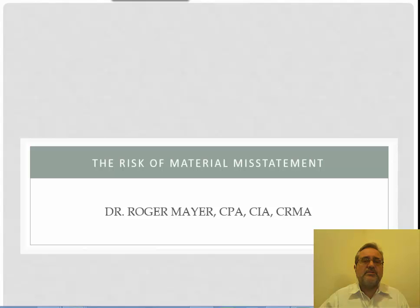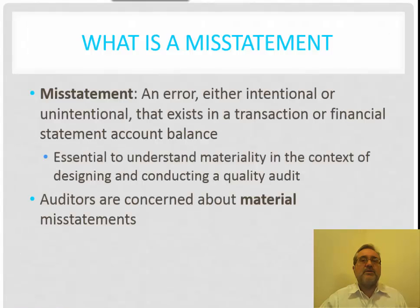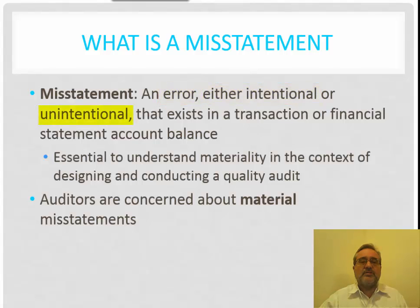In this lecture, we're going to be considering the risk of material misstatement. We're going to talk about two separate things: risk, which we'll look at from several different perspectives using the audit risk model, and material misstatements. A misstatement is an error, either intentional or unintentional, that exists in a transaction or a financial statement account balance — essentially errors or fraud related to financial statements and account balances.